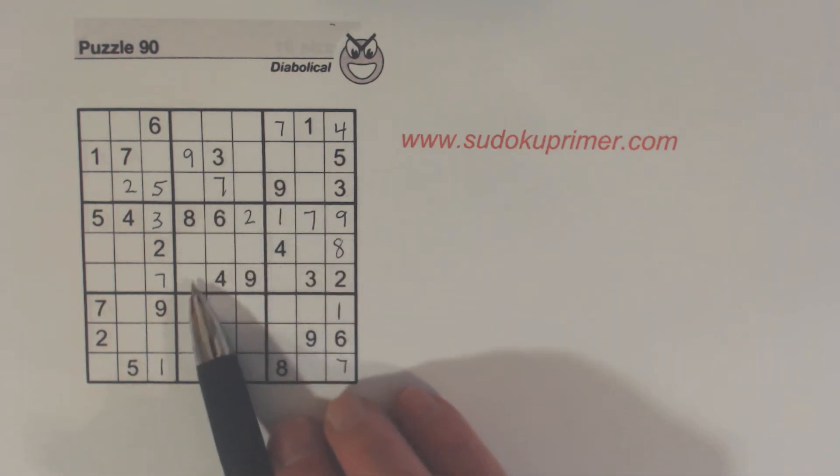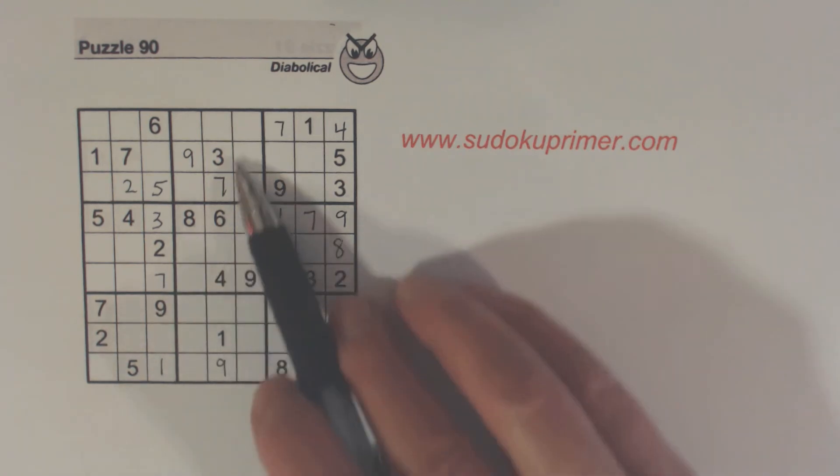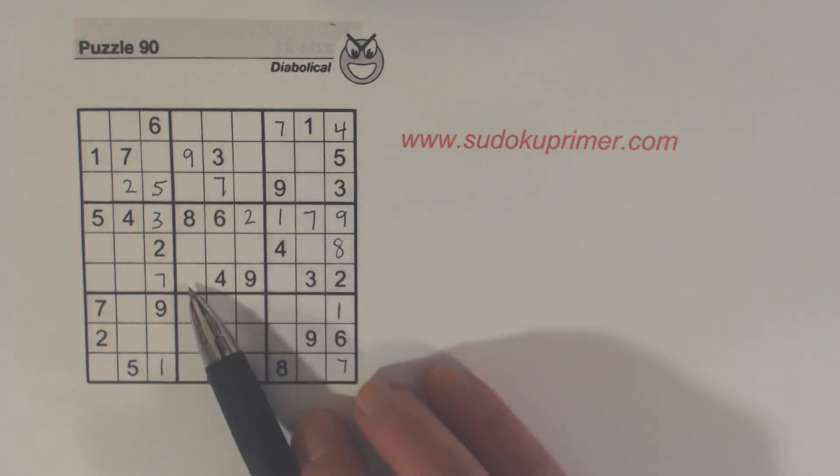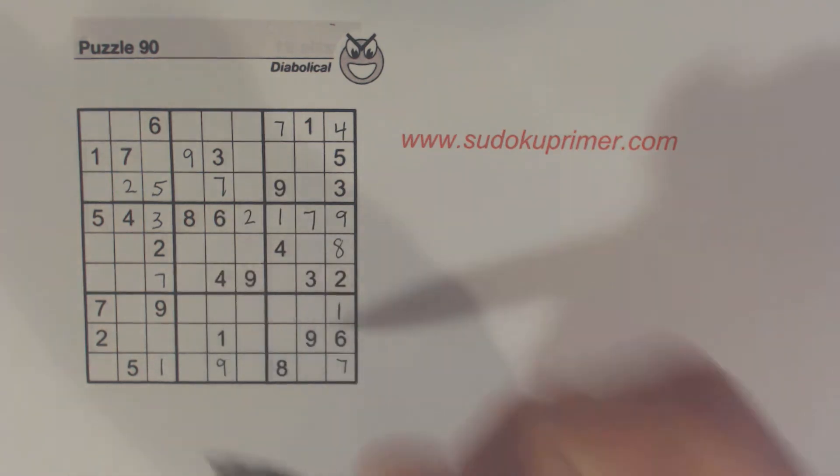Now let's look at this box right here. There are 4 numbers missing here too. 1, 3, 5, 7. 1, 3, 5, and 7. And again, we have 1, 3, and 7 here. So these are 1, 3, 7 triplets. And so we know that's a 5.